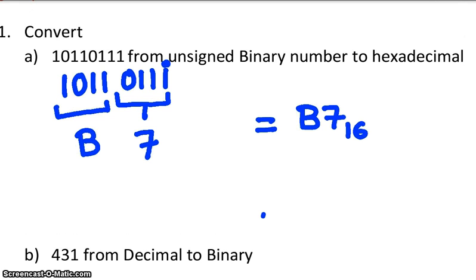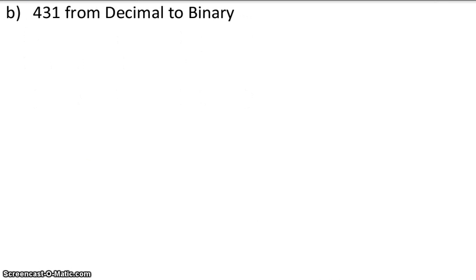For our next problem, we're going to look at converting from decimal to binary. Converting from decimal to binary requires us to repeatedly divide the number 431 by 2 and keep track of its remainder. So let's do that — 431.